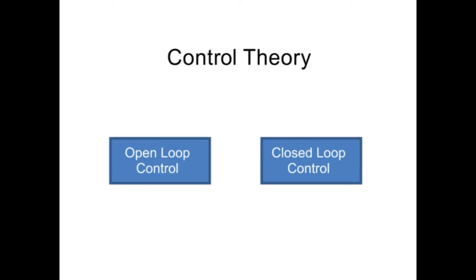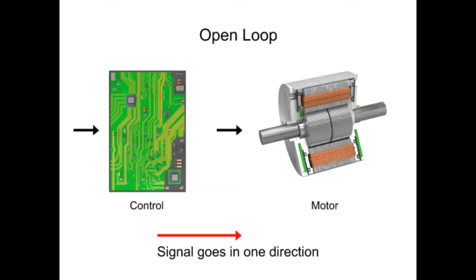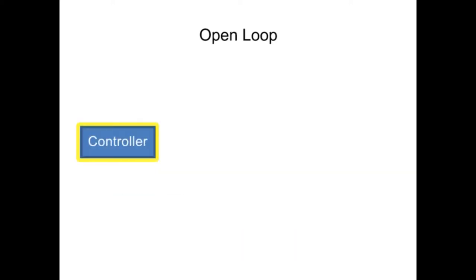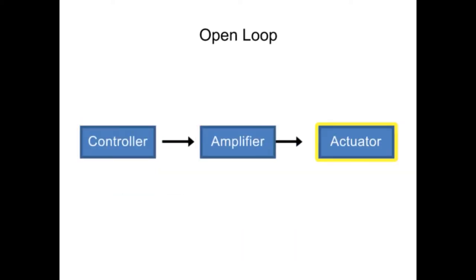Categories of control theory are defined as open-loop and closed-loop control. In an open-loop system, the output is not measured or monitored for comparison with the system set point. Open-loop systems are commonly referred to as non-feedback systems.